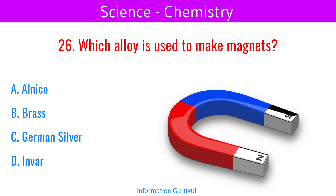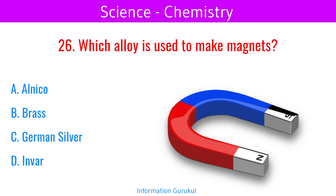Which alloy is used to make magnets? Alnico. Alnico is a type of permanent magnet material that contains aluminium, nickel and cobalt in addition to iron.